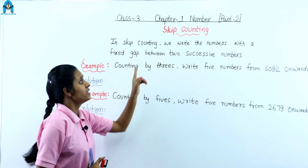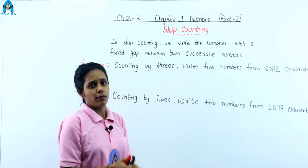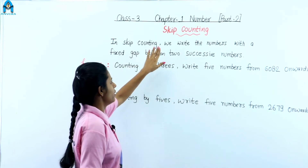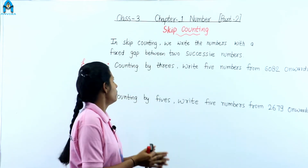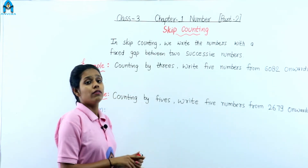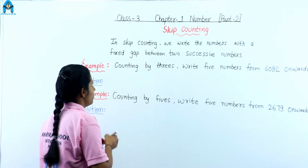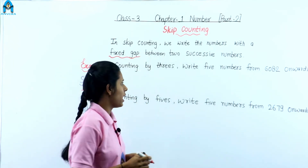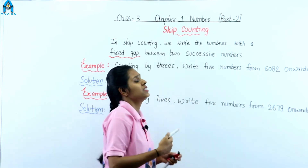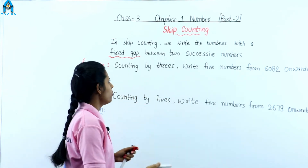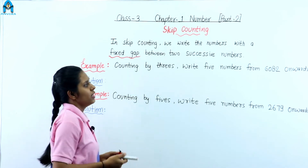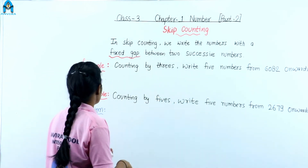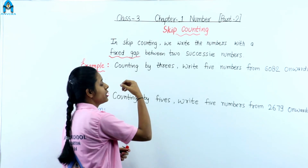Our next topic is skip counting. In skip counting, we write numbers with a fixed gap between two successive numbers. Let's do some examples — first, counting by threes.